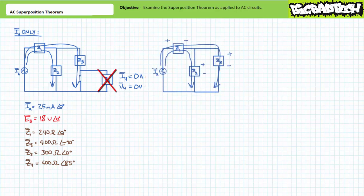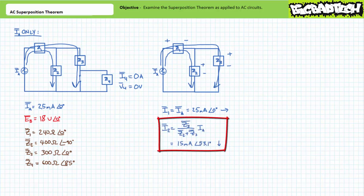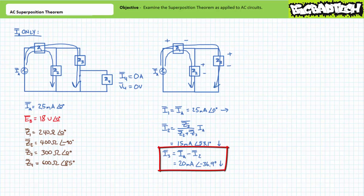With impedance element Z4 removed from consideration, current will flow through the circuit as indicated. Sinusoidal AC current source IA forces 25 milliamps at an angle of zero degrees through Z1, so I1 equals 25 milliamps at zero degrees traveling left to right. Current then splits into two paths: one through Z2 and another through Z3. An application of the current divider rule demonstrates I2 will be 15 milliamps at an angle of 53.1 degrees traveling top to bottom, and by Kirchhoff's Current Law, I3 will be the remaining 20 milliamps at an angle of 36.9 degrees traveling top to bottom.